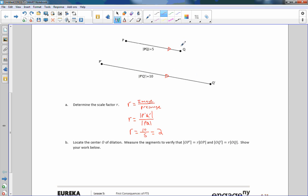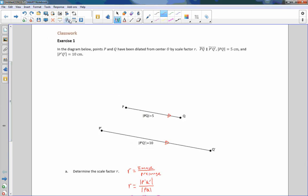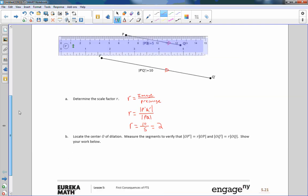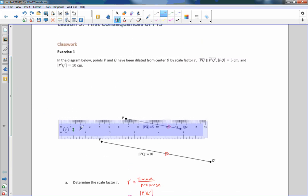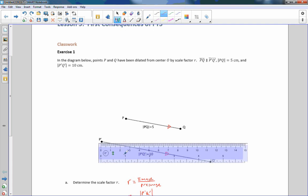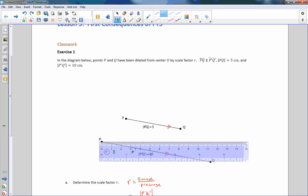Now B says to locate the center O of the dilation and measure the segments to verify that OP prime equals R times OP, and OQ prime equals R times OQ. So what we need to do is use our ruler. I need to draw a ray, but in this case I don't know where the starting point is. So I'm going to draw it in the opposite direction, and it's going to go beyond. So I'm kind of drawing a ray backwards.